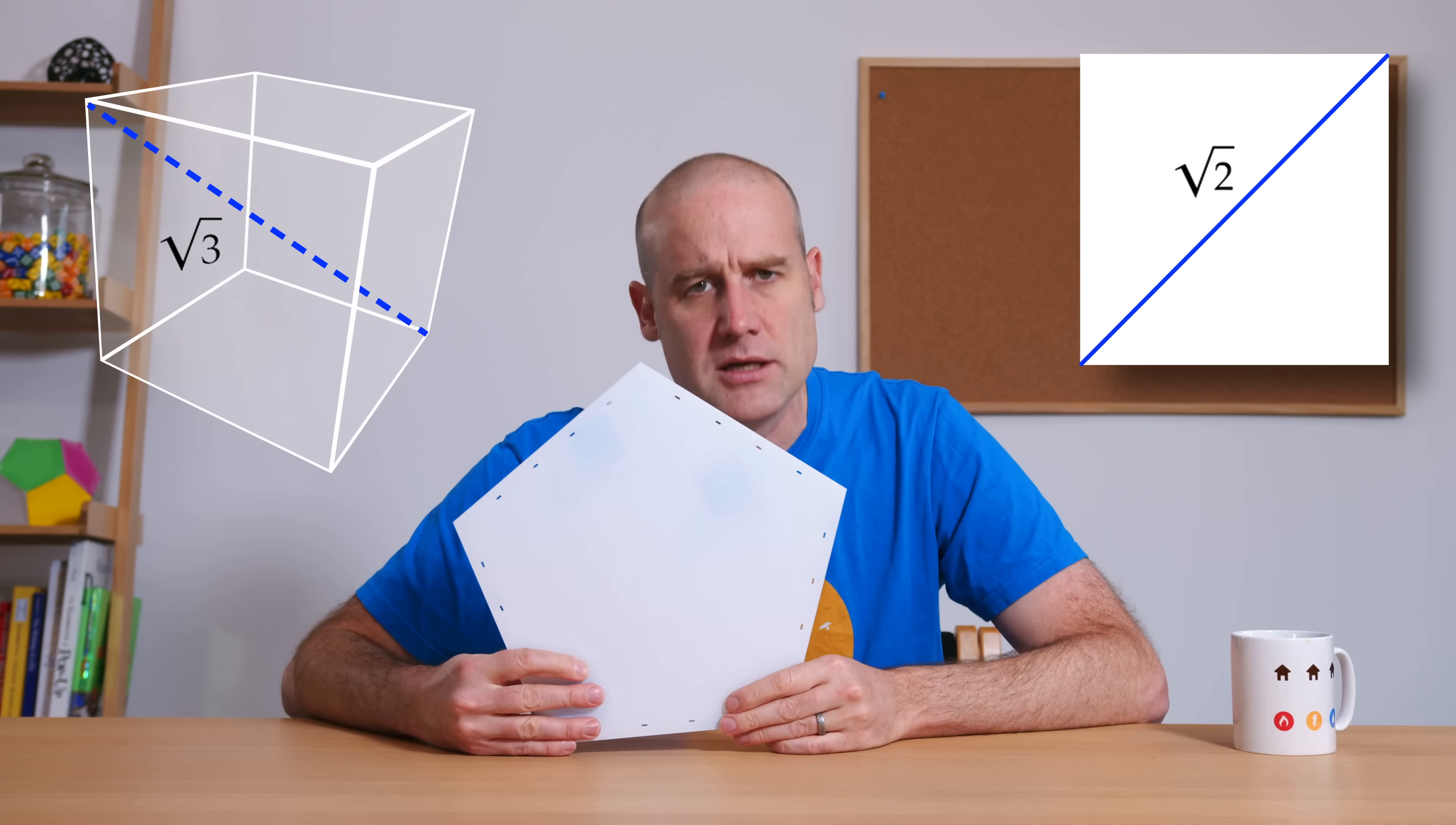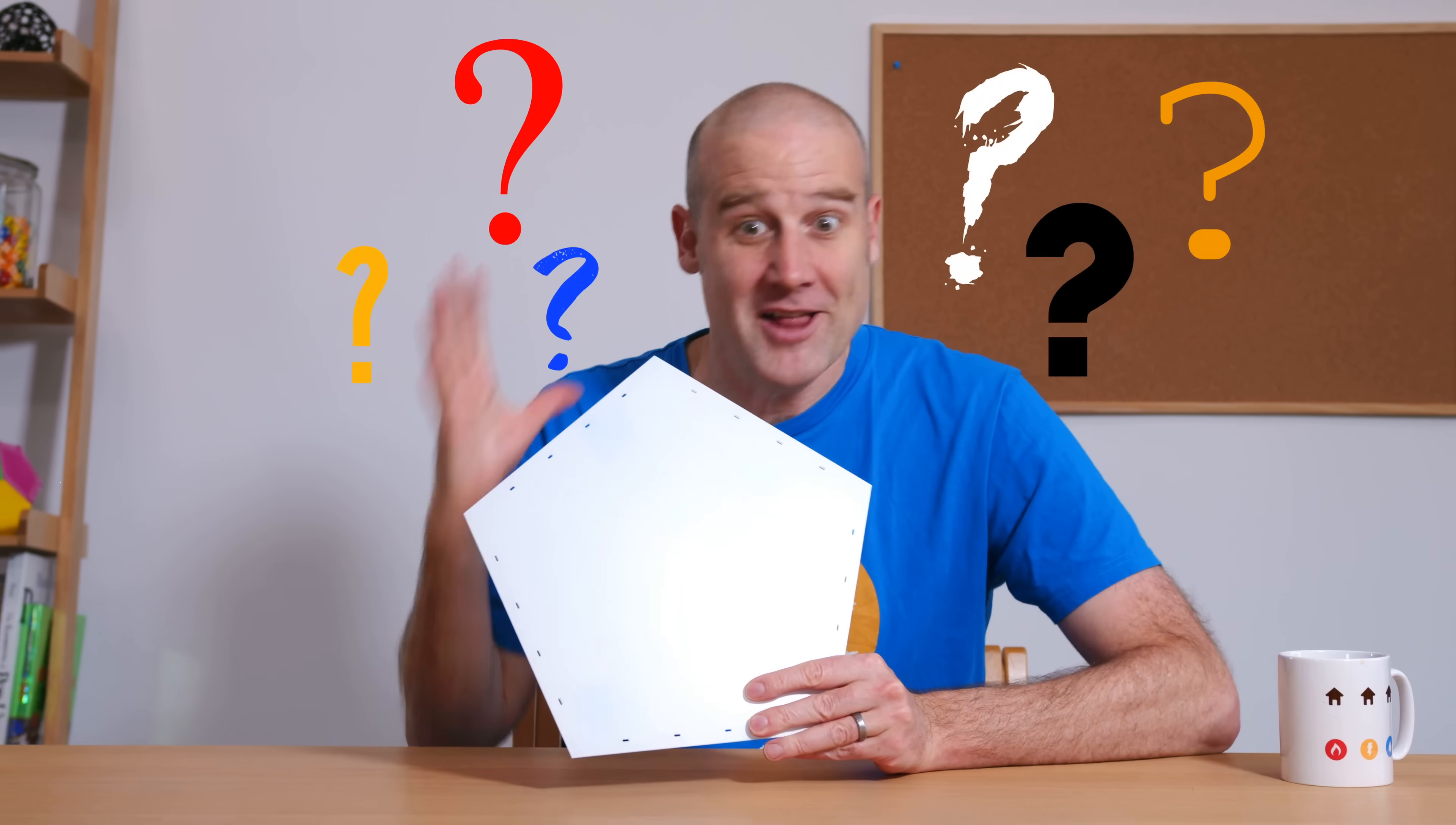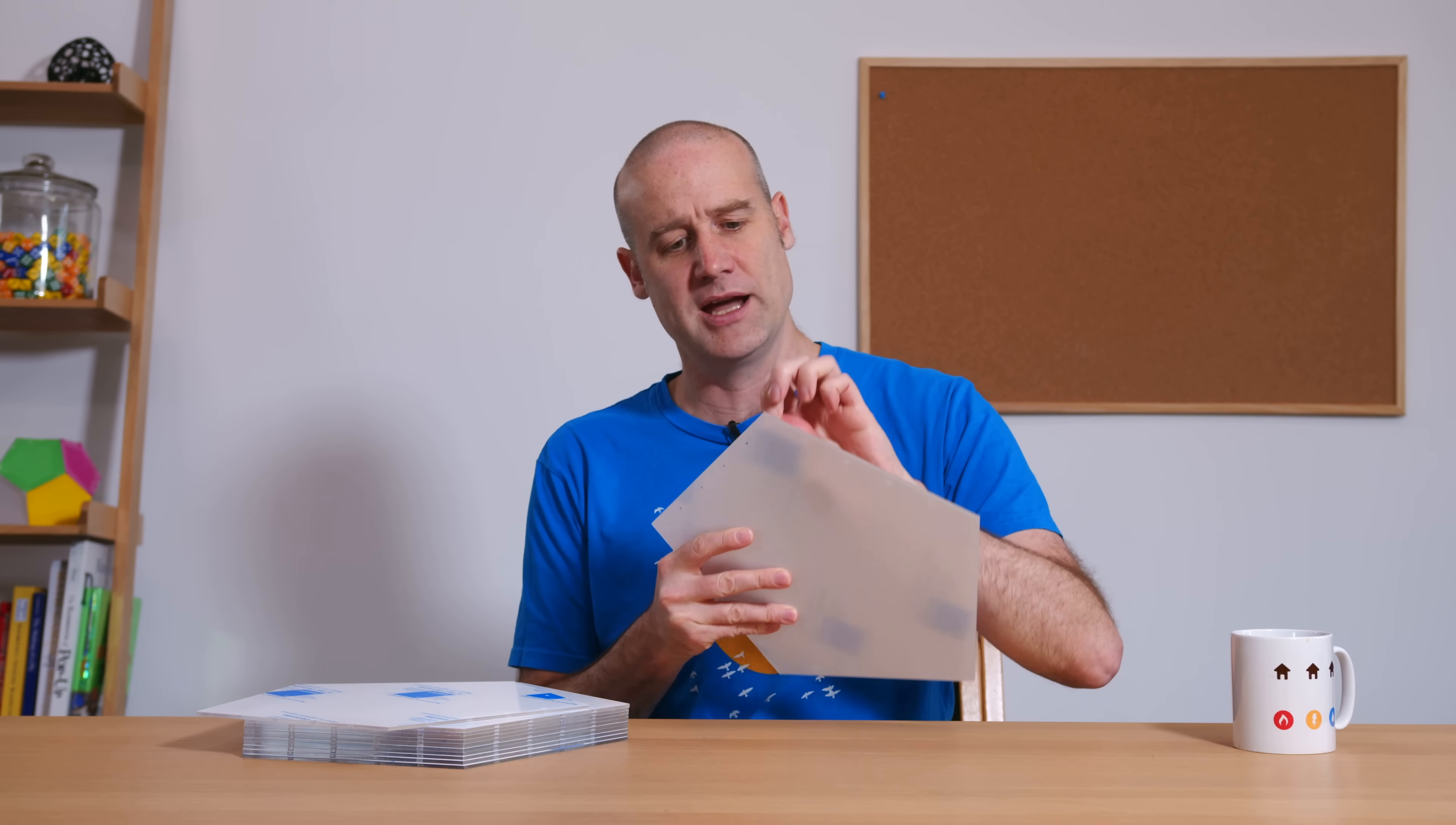If we start with the pentagon and we go up, we go from the golden ratio to what? Well, I want to find out, which is why I haven't just got one of these, I've actually got 12. They're made from laser-cut clear acrylic. Once I peel off all of these bits of film, we're going to build a regular pentagonal dodecahedron and see how long its space diagonals are.